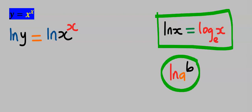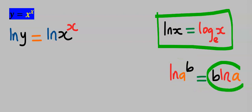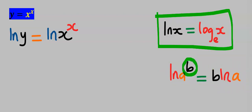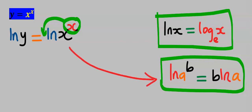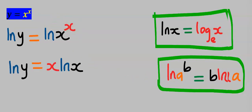Also recall that the natural log of a to the power of b is equal to b times the natural log of a. That is, the exponent b comes to the front of the natural log. With this concept, this x at the power needs to come down to the front of this natural log according to this rule.